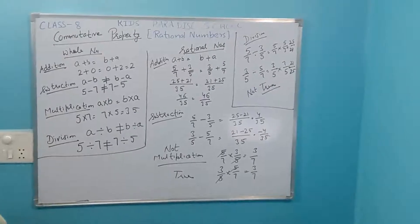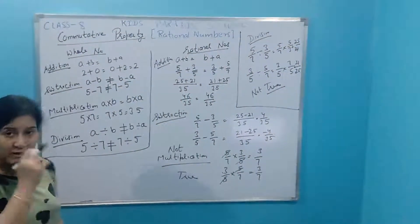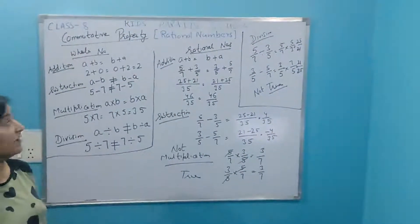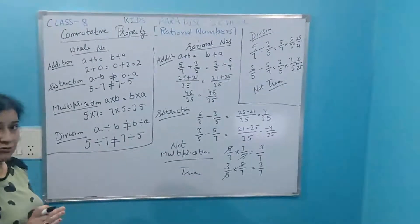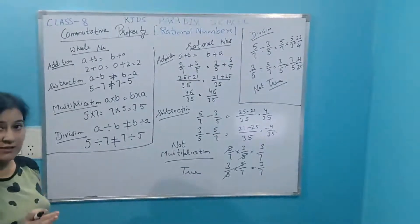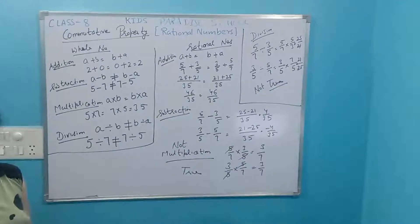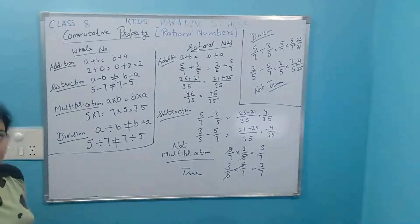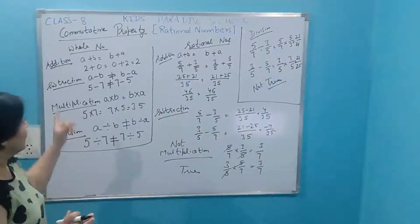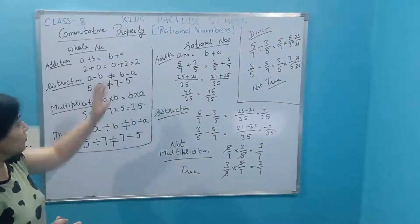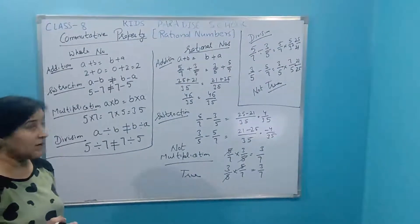The closure property covers addition, subtraction, division, and multiplication. We will check whether it is applicable or not for whole numbers, natural numbers, rational numbers, and integers. Then I will tell you the commutative property.